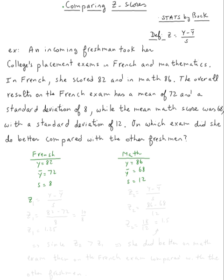So the z-score for French, by definition, is equal to y minus y bar over s. So z equals 82 minus 72 over 8.